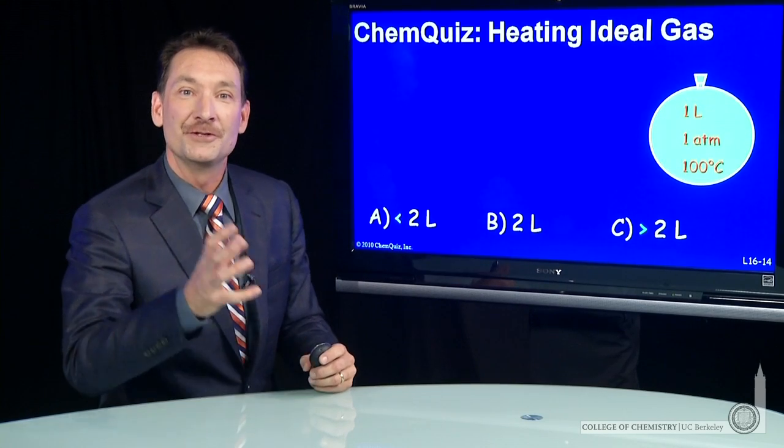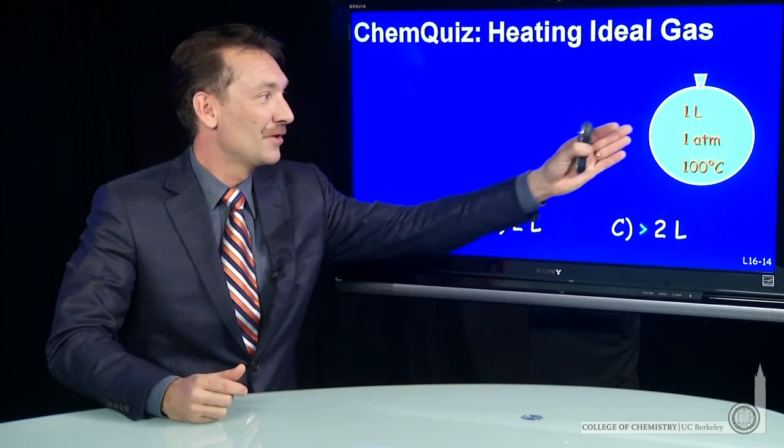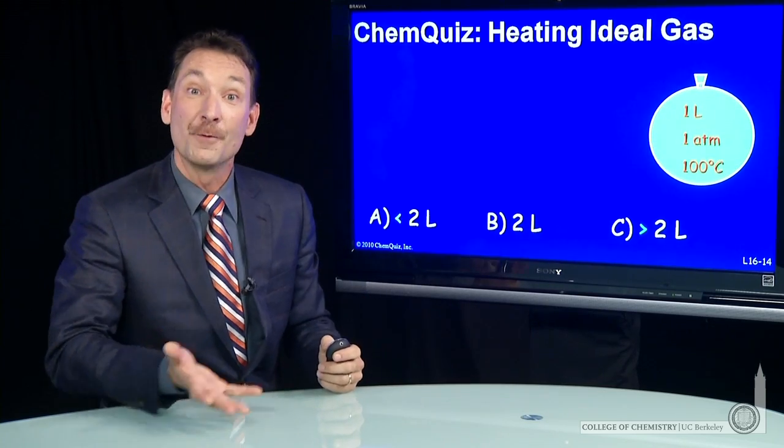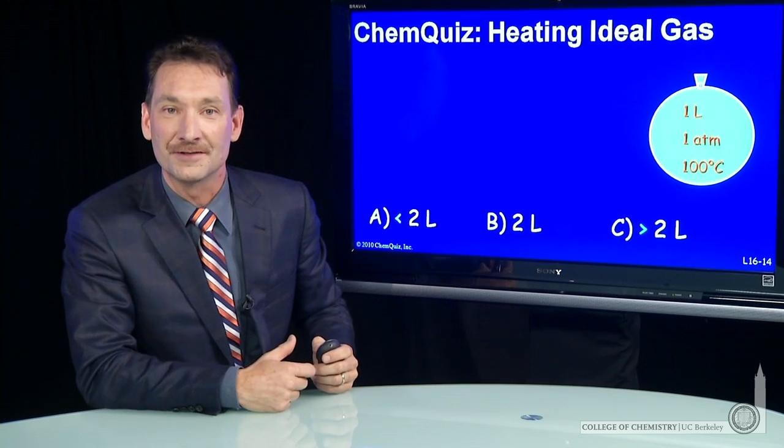We're looking at what happens when you take a sample of ideal gas, 1 liter at 1 atmosphere of pressure and 100 degrees Celsius, and raise the temperature to 200 degrees Celsius.